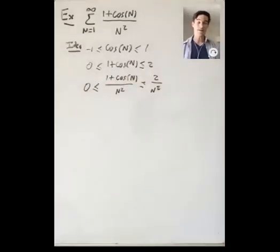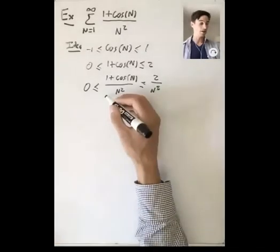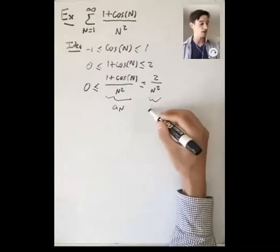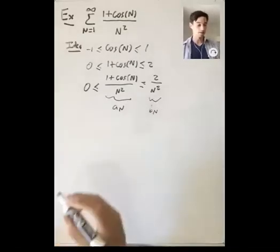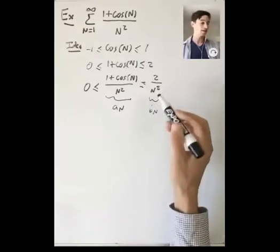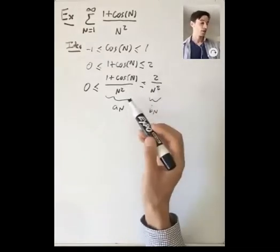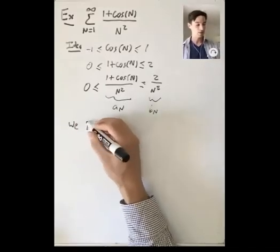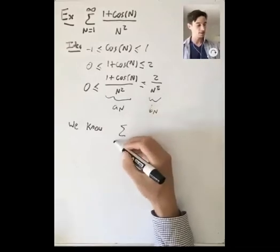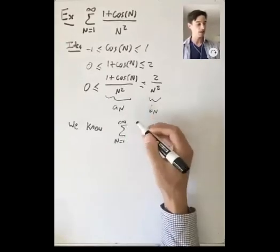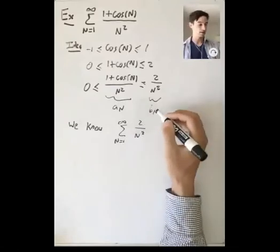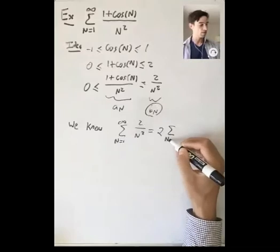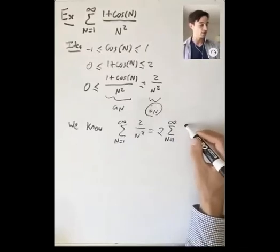So now we're in the setup of the comparison test: we let the thing we care about be a_n, and the bigger sequence 2/n² be b_n. The comparison test is going to tell us something about when the a_n sum converges in terms of the b_n sum. We know the sum of b_n — that is, the sum from n=1 to infinity of 2/n² — equals 2 times the sum from n=1 to infinity of 1/n².